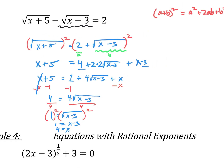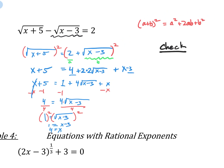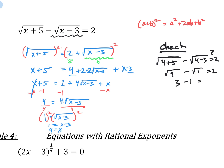We've got x equals 4, but now we need to test that out. Plugging in 4: we get the square root of 4 plus 5 minus the square root of 4 minus 3, which is the square root of 9 minus the square root of 1 — that's 3 minus 1, which equals 2. And indeed 2 equals 2, so x equals 4 is our solution.